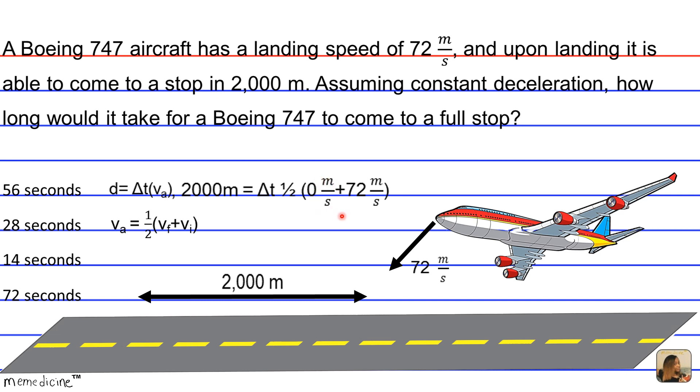plus 0 meters per second. This is going to be our final velocity because the Boeing 747 comes to a halt, plus 72 meters per second. This is our initial velocity.